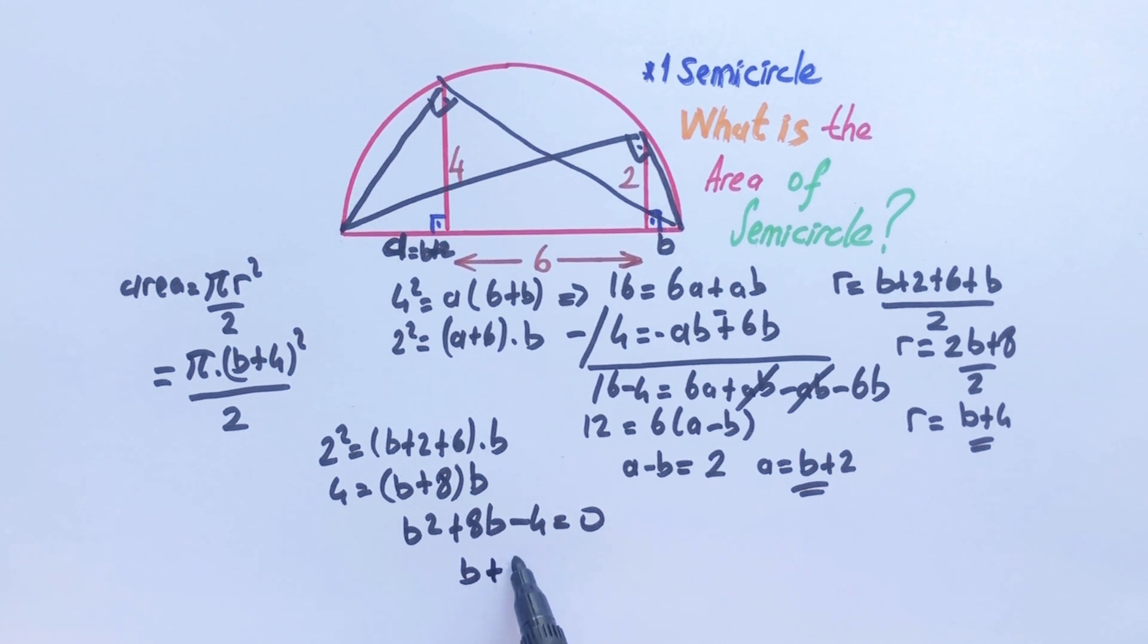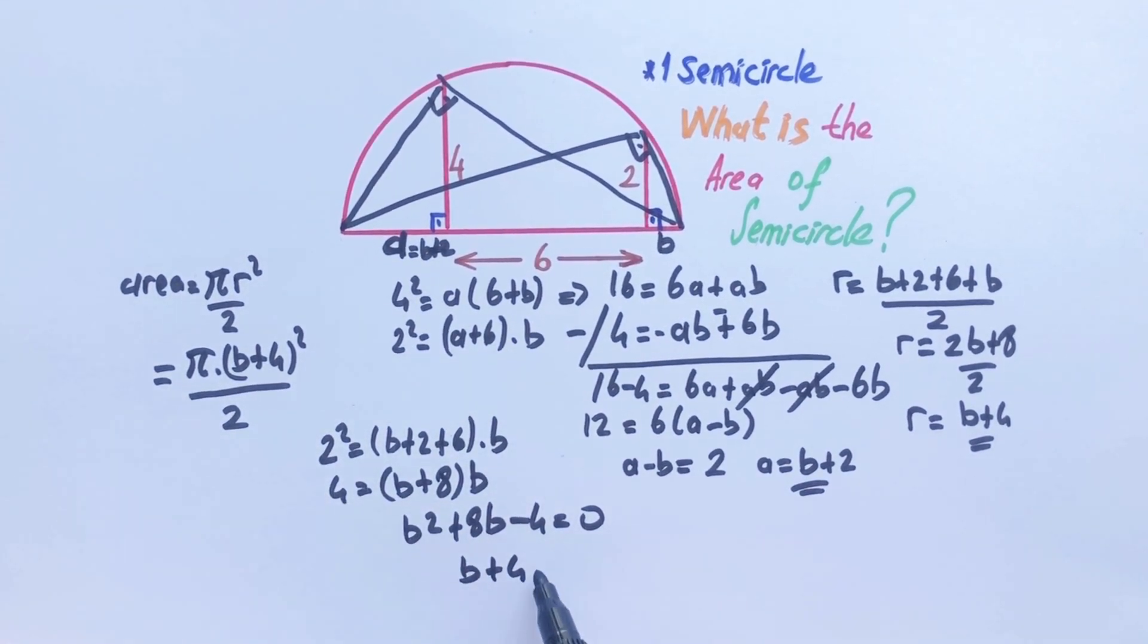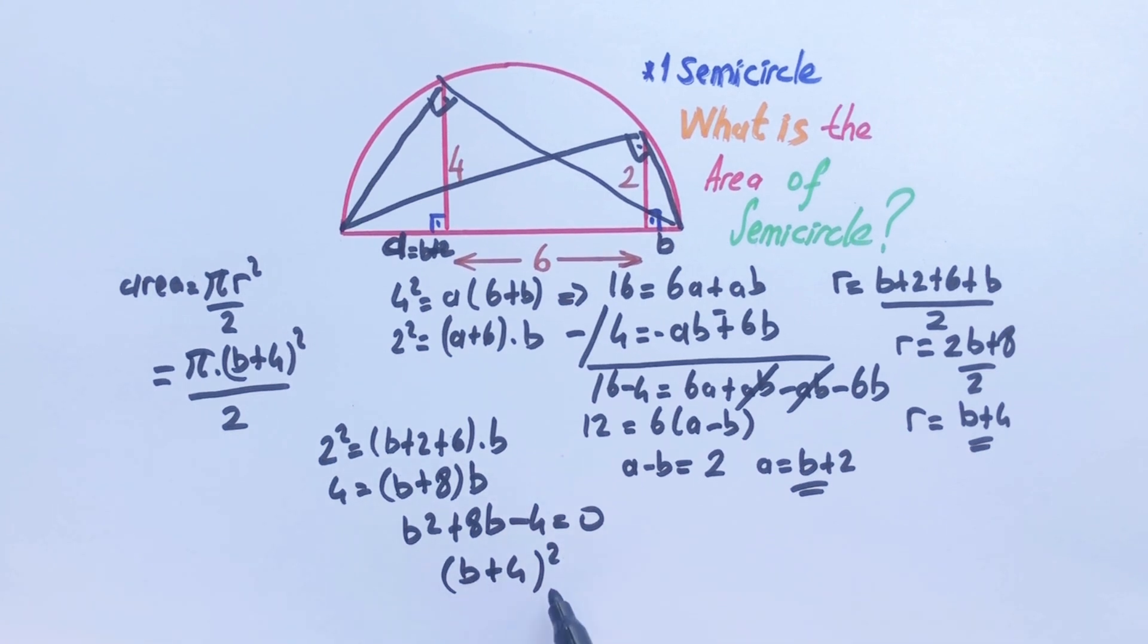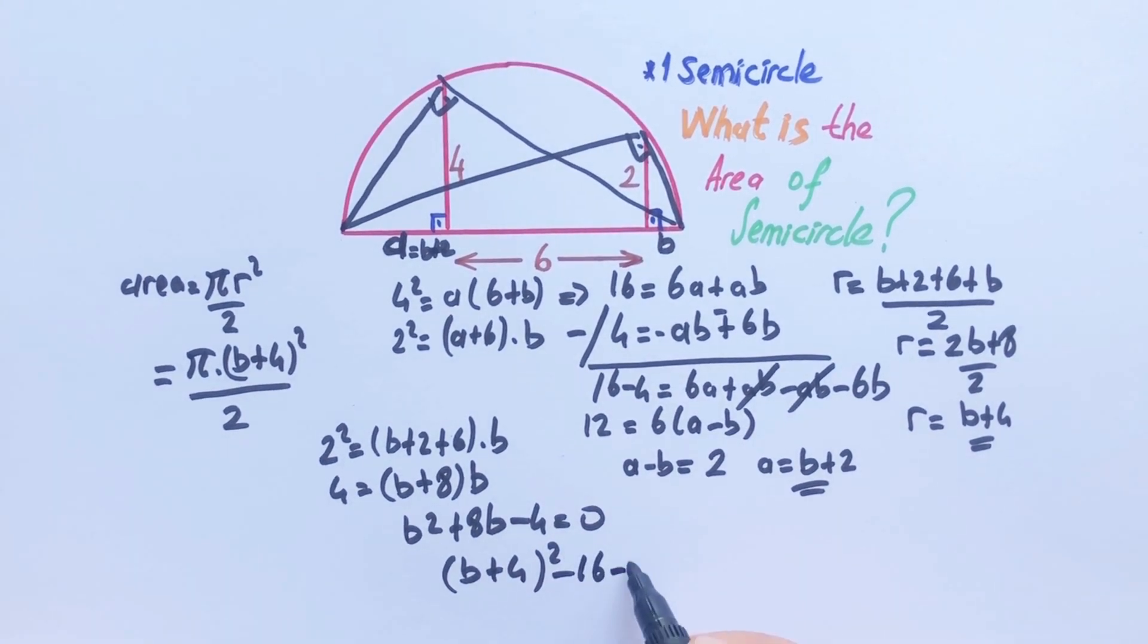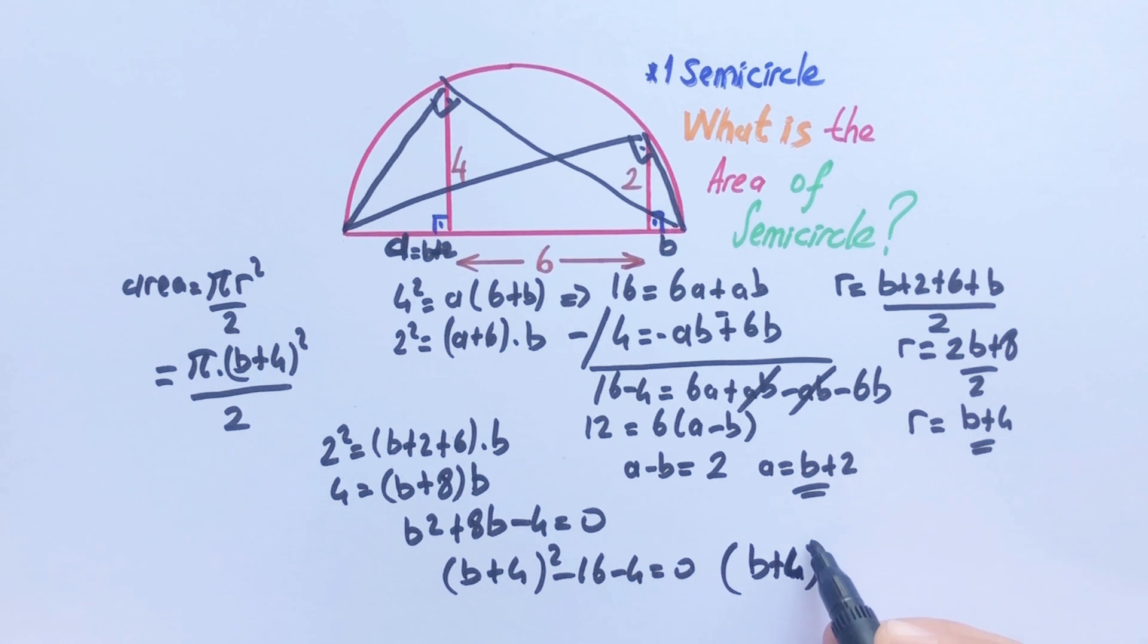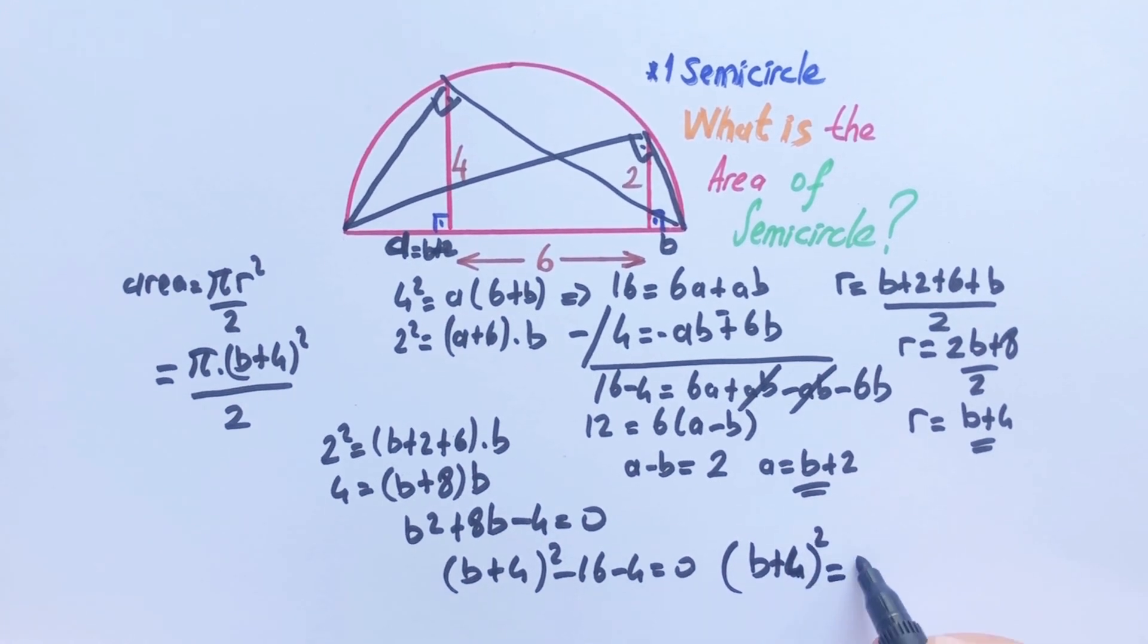Let's convert this expression to a perfect square. b plus 4, (b plus 4) squared minus 16 minus 4 equals 0. Therefore (b plus 4) squared equals 20.